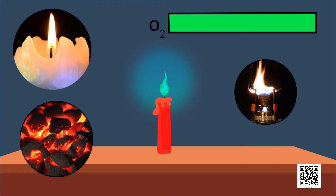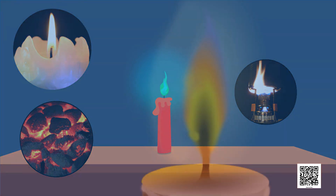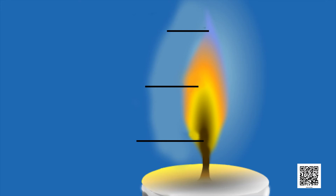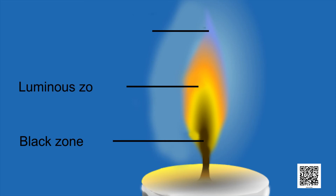A candle flame can be divided into three zones: the innermost zone, which is the dark zone; the middle zone, called the luminous zone, which is yellow in color; and the outer zone, which is the non-luminous zone, blue in color. Let's perform an activity to understand the three zones of a candle flame.